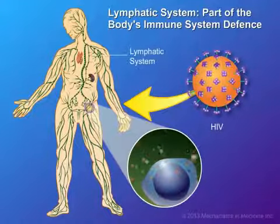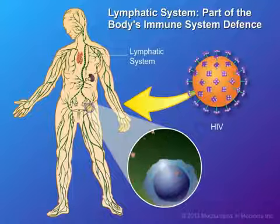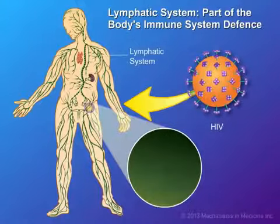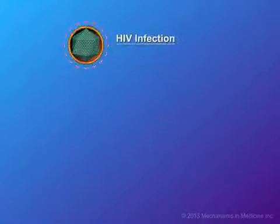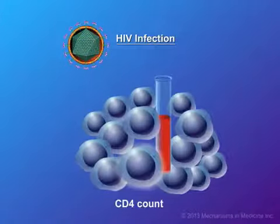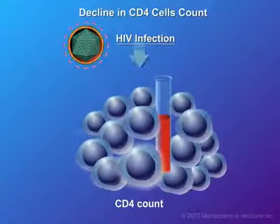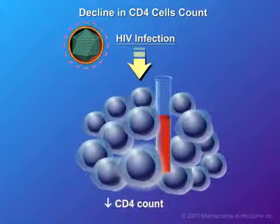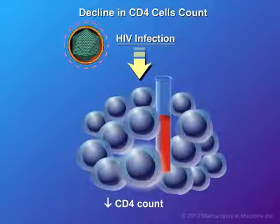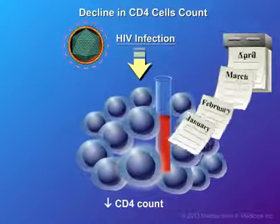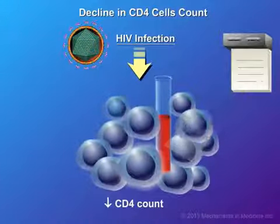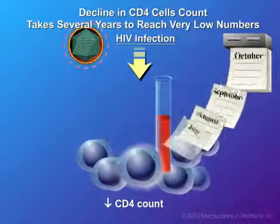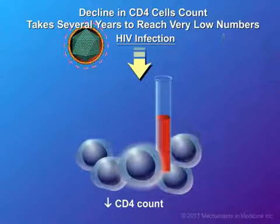The result is that the CD4 cell count in the body decreases as infected cells are destroyed by the HIV virus. The characteristic feature of HIV infection is the decline in CD4 cells. As such, CD4 cell counts are commonly used to monitor the progress of HIV infection. However, declines in CD4 cells in the bloodstream can take several years to reach very low numbers.